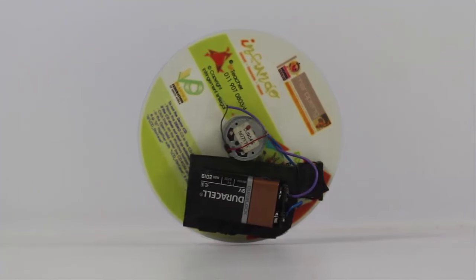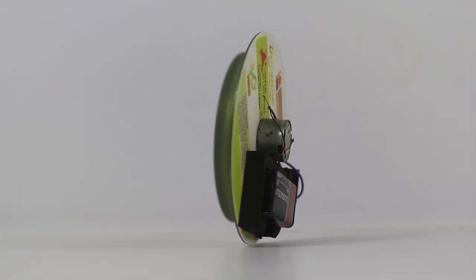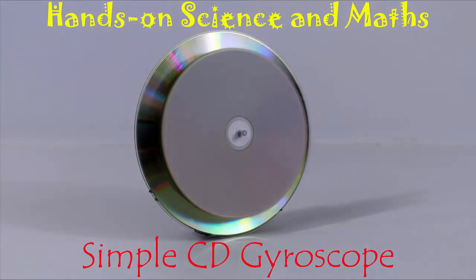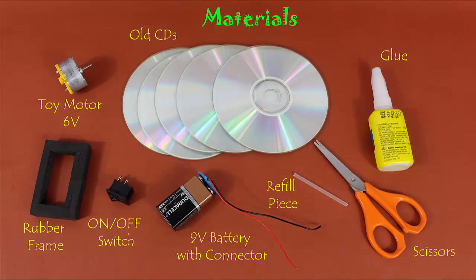This is the most amazing gyroscope. As a heavy disc spins at a fast speed, it prevents the big CD from falling. The CD gyroscope stands erect and slowly spins on its point of contact.